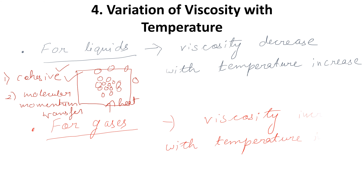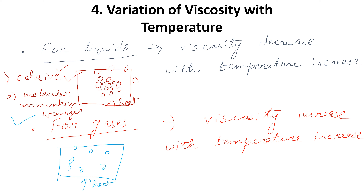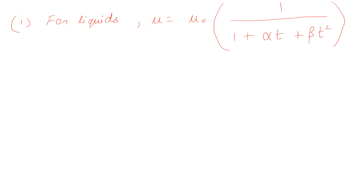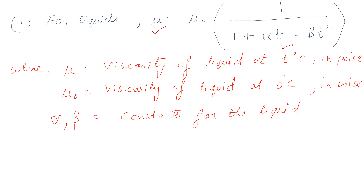For gases, viscosity increases when temperature increases. In gases the particles are far apart, so cohesive force does not play the main role — molecular momentum transfer plays the major role. When a gas is heated, molecular momentum transfer increases, so viscosity increases. Mathematically for liquids: mu equals mu0 multiplied by 1 divided by (1 plus alpha-t plus beta-t-squared), where mu is viscosity at t degrees Celsius, mu0 is viscosity at 0 degrees Celsius, and alpha and beta are constants for the liquid.